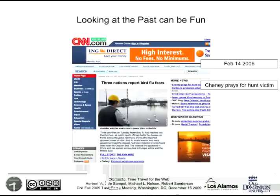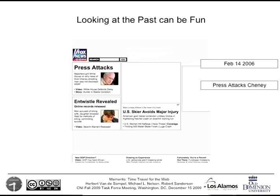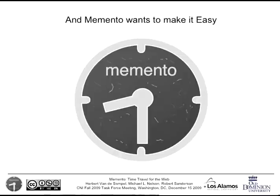Memento is all about the past and the past of the web. Looking at the past is not only important for historical analysis, but it can also be fun. Here's a CNN homepage from the Internet Archive around the time of the Dick Cheney shooting incident, February 2006. CNN says 'Cheney prays for hunt victim.' But the Fox News page says 'Press attacks Cheney,' and you start wondering who the real victim was.